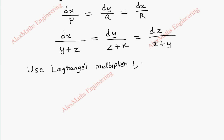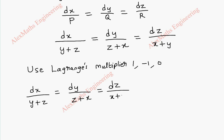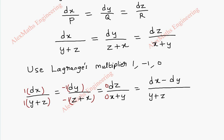For the first multiplier it is 1, for the second it is minus 1, and the third is 0. Writing everything out: dx by y plus z equal to dy by z plus x equal to dz by x plus y. Multiplying with 1, minus 1, and 0 respectively, then using the ratio property to add all numerators, we get dx minus dy in the numerator, and y plus z minus z minus x in the denominator. After cancelling, this becomes dx minus dy by y minus x.